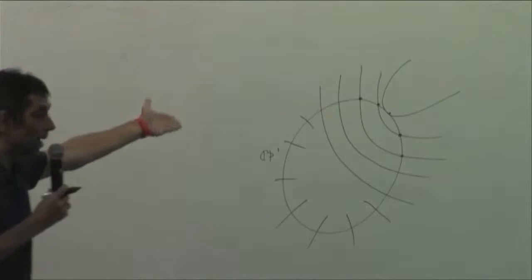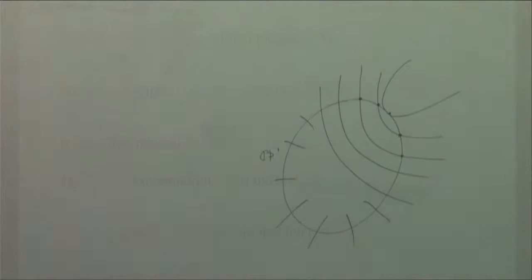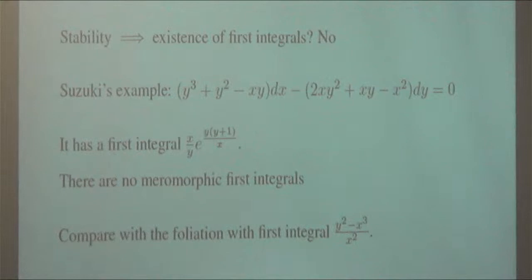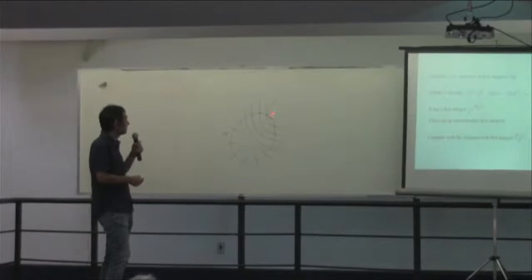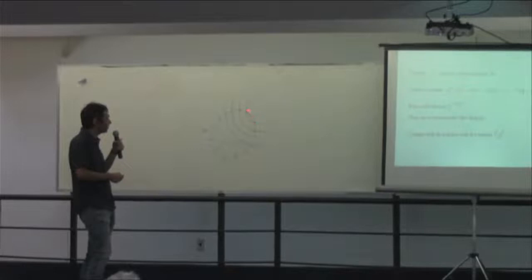This example illustrates that it is nice to have finite holonomy groups and nice first integrals, but finiteness of holonomy groups does not necessarily imply nice first integrals, because phenomena like the tangency of leaves create transcendental effects. This example is due to Suzuki.